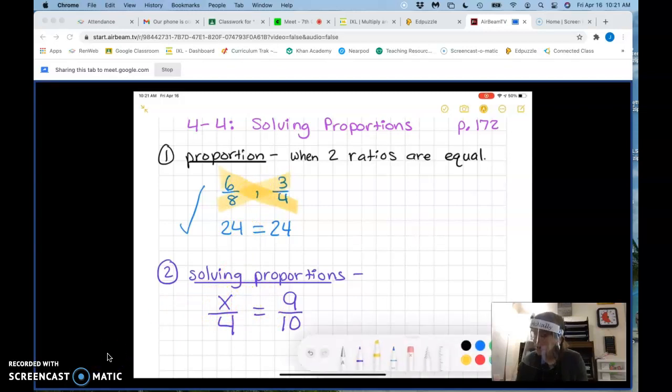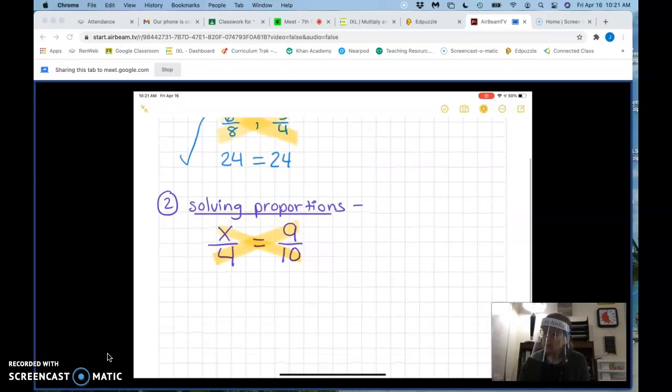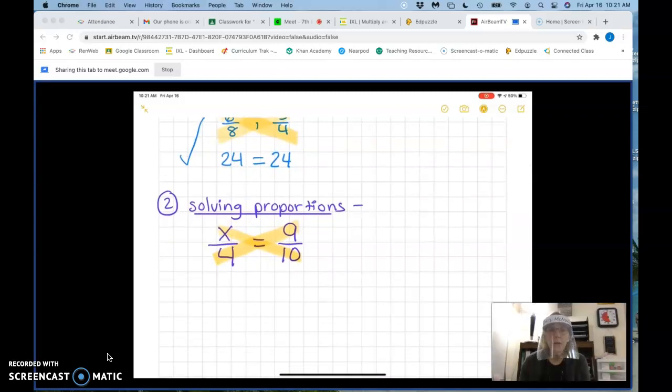Let's draw the X to show me that you're gonna cross multiply. So let's draw the X. And then let's multiply. So what is X times 10? Well anytime we multiply a number by a variable we just write it with the number first. So X times 10 is 10X. And we're gonna bring our equal sign down. And what is 4 times 9? 36. Yes.